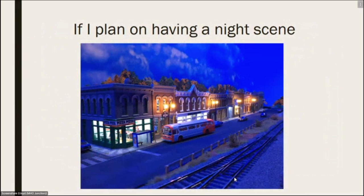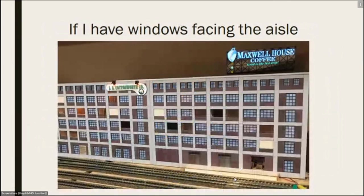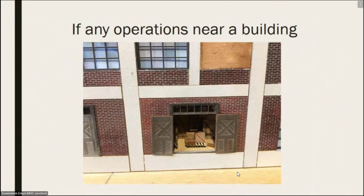If I'm going to have a night scene, and there are lights inside the building, we want to see some storytelling in that building. If I have windows facing the aisles — this building wasn't totally finished when I took the picture — but everywhere you see black areas, there's going to be a scene inside those boxes. And if you see at the bottom right, there are boxes because there are operations near that building. When you're doing operations, you want to see something.